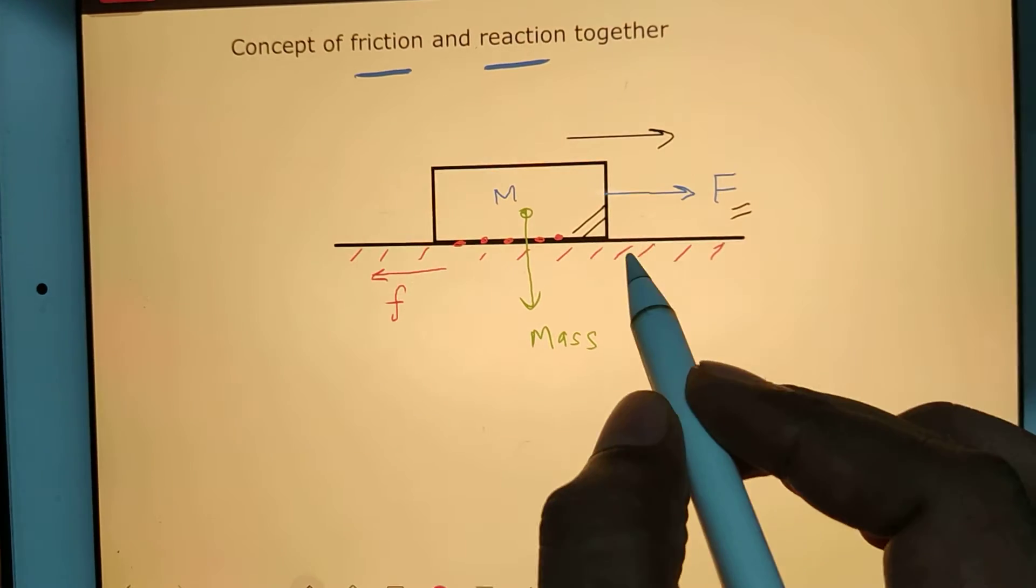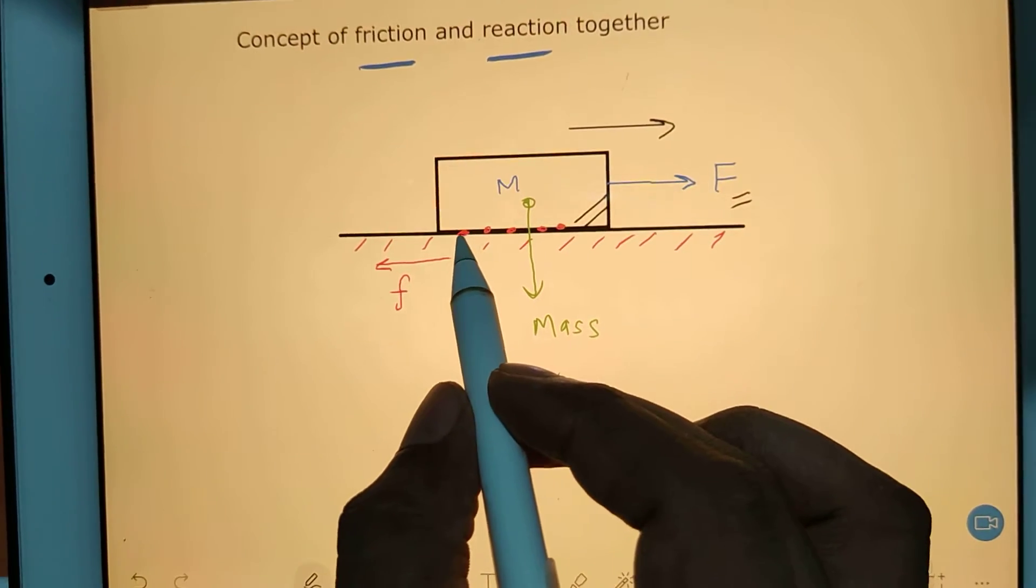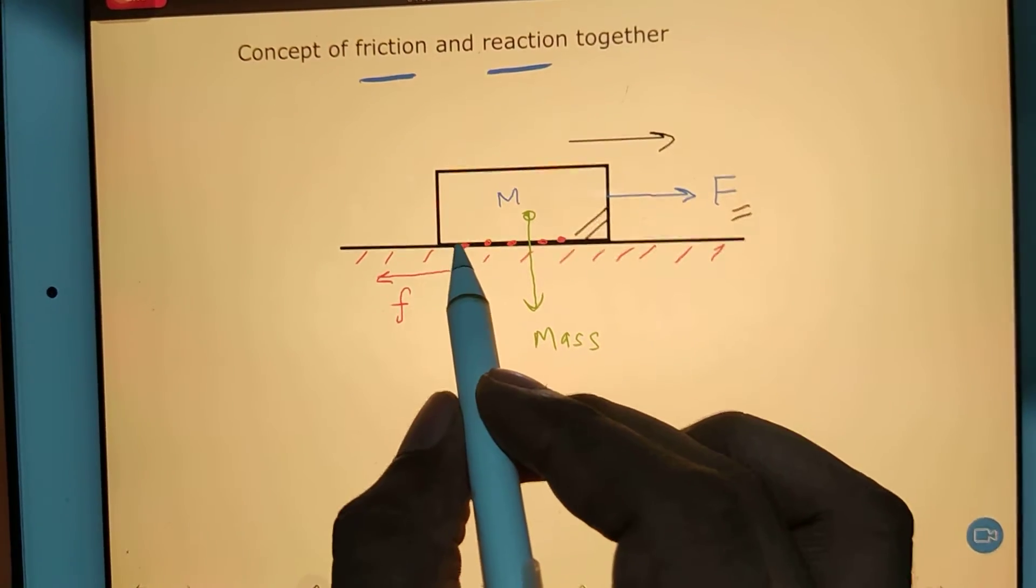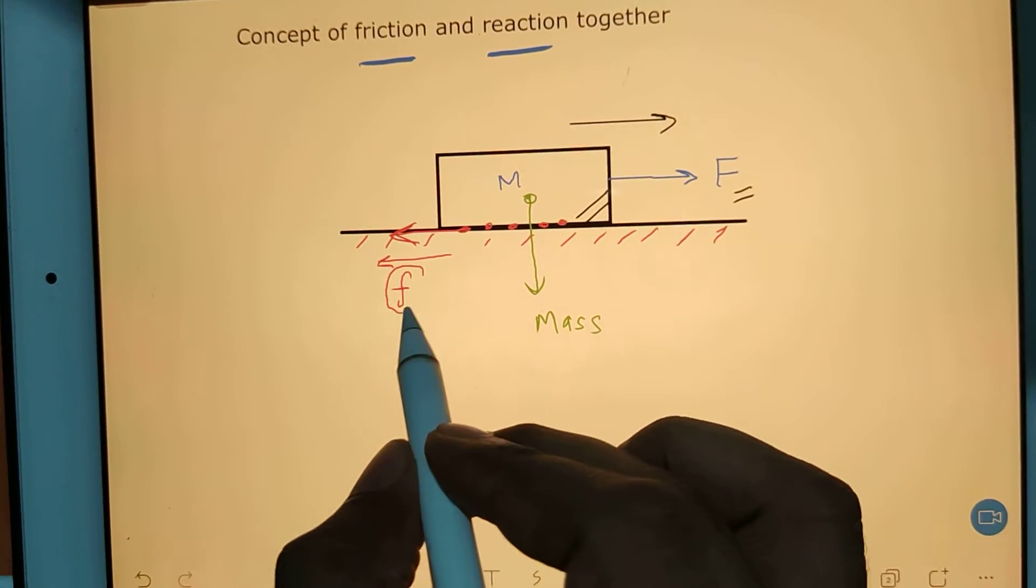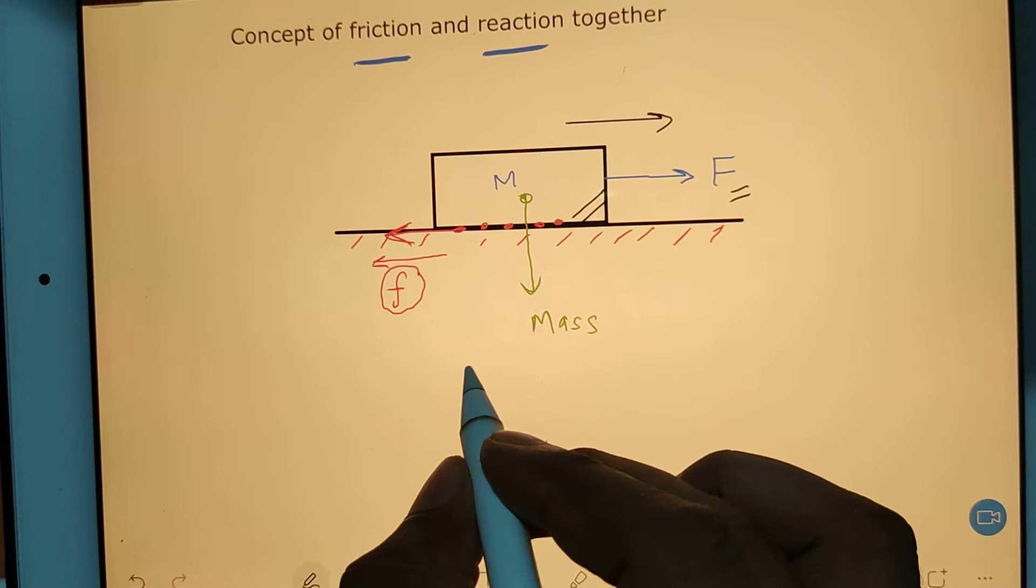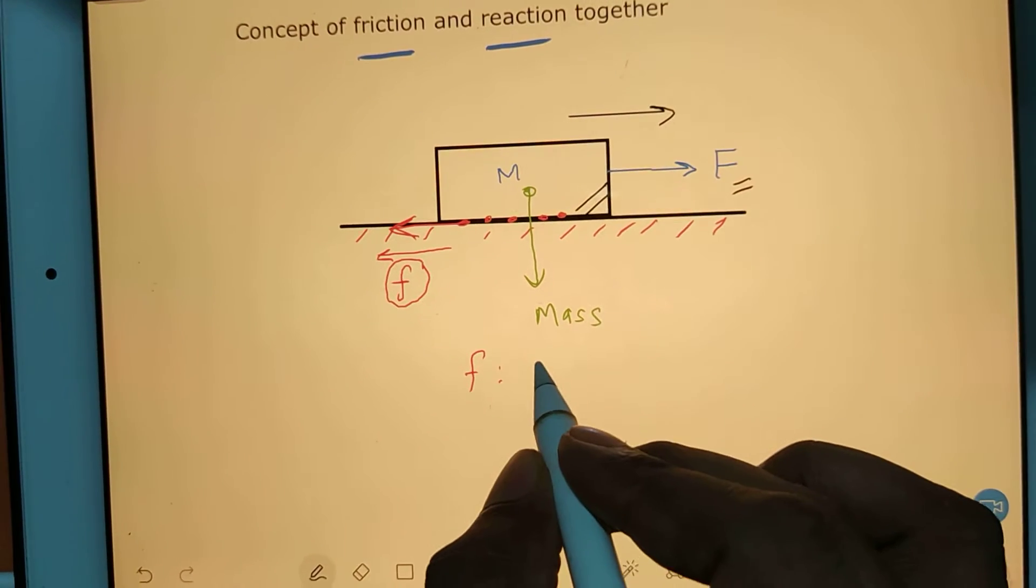So that friction force f - in last class we saw that your f is nothing but μ into R, right? What is R here?